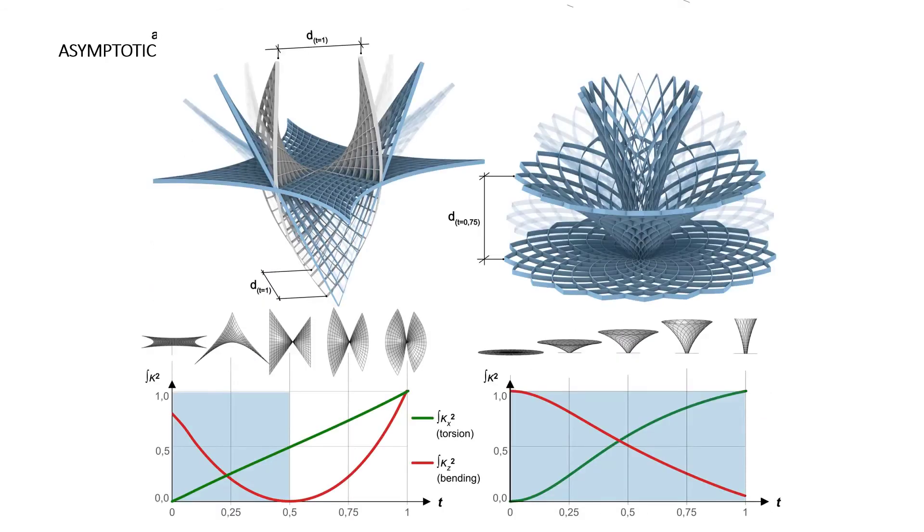The curvature squared graphs reveal the contrary character of torsion and bending. Possible minimum energy states can be controlled by the stiffness relations of torsion and uniaxial bending. The range of possible minimum states is marked blue.